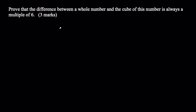Firstly, what you want to recognize is how to write this sentence algebraically. It says the difference between a whole number and the cube of this number. A whole number just means any number — we can give that a variable like x. Then the cube of this number would be x cubed. So we can write this sentence as x cubed minus x, which represents that difference.